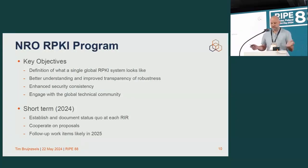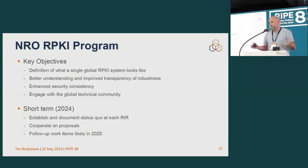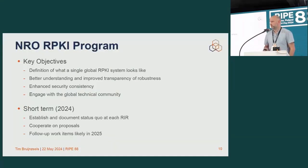Essentially, it's a definition of what a single global RPKI system should look like. We want to have a better understanding and improve transparency of robustness of the system — for example, how quickly do you publish? We want to look at things from a security angle: are we all handling security well enough, or are there gaps, because they might affect the system as a whole? And of course, a cross-cutting concern is that we want to engage with the technical community — you and others. In the short term, we're meeting and trying to make these goals more tangible, establishing where we are now, and we hope to get real tangible work items out of this going into next year.